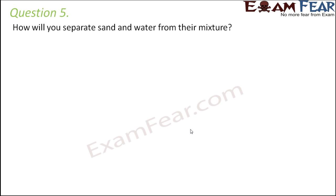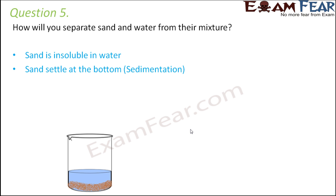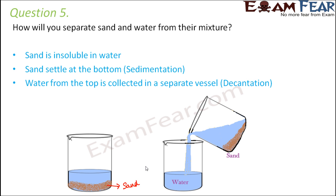Question number 5: how will you separate sand and water from a mixture? Sand is insoluble in water, so when you allow the sand-water mixture to stand undisturbed, the sand, being heavier, settles at the bottom — this is called sedimentation. The clean water above can then be poured into another container, which is called decantation. Container one will contain the sand and container two will have the clean water.